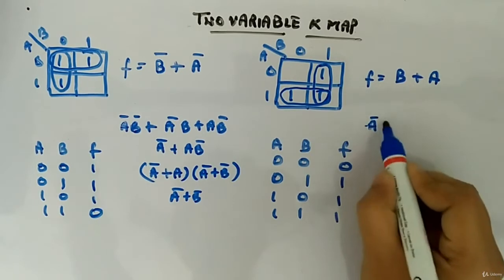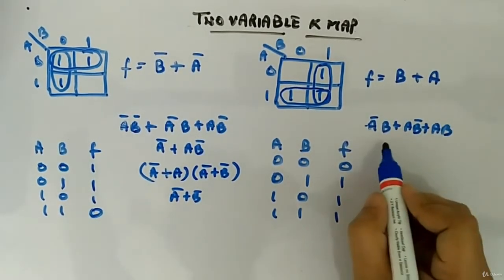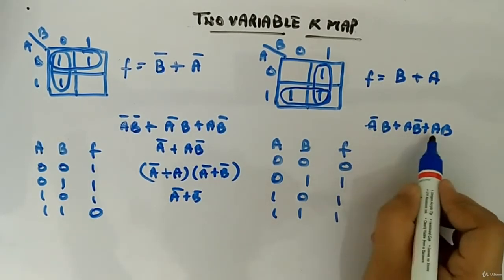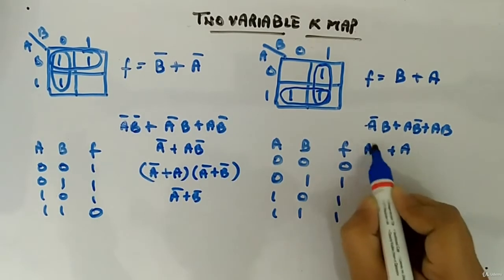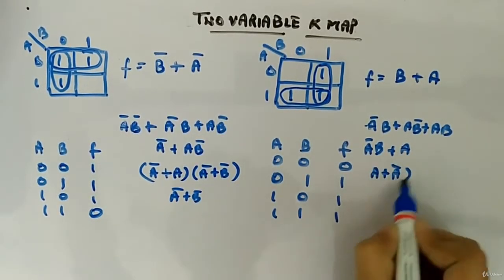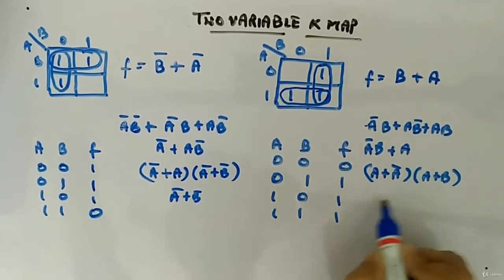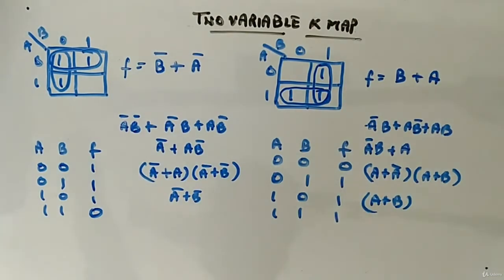Here also if you will do A bar B plus A B bar plus A B. Now this will give you, you can take this common A plus A bar B, and then you will get A plus A bar into A plus B. So which will ultimately give you A plus B, which is same as this.